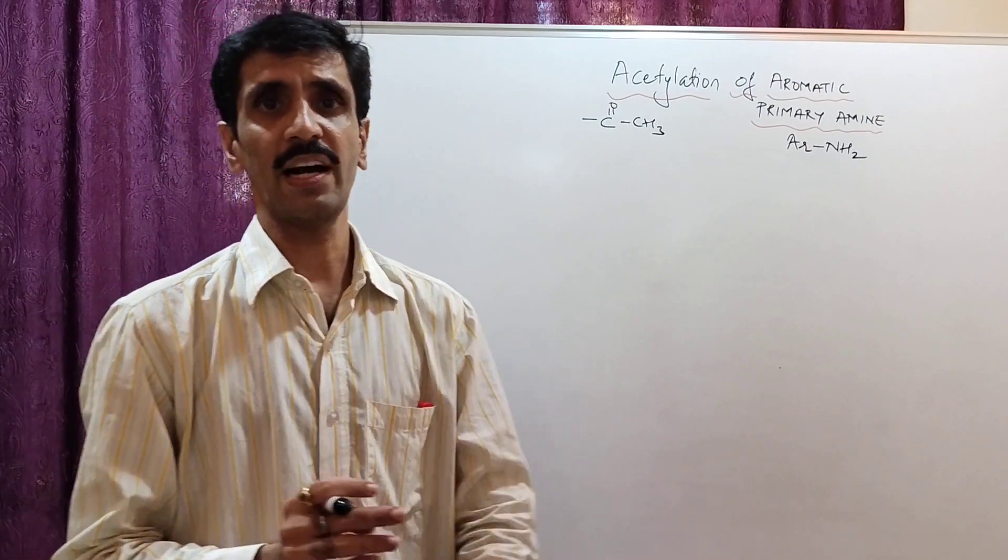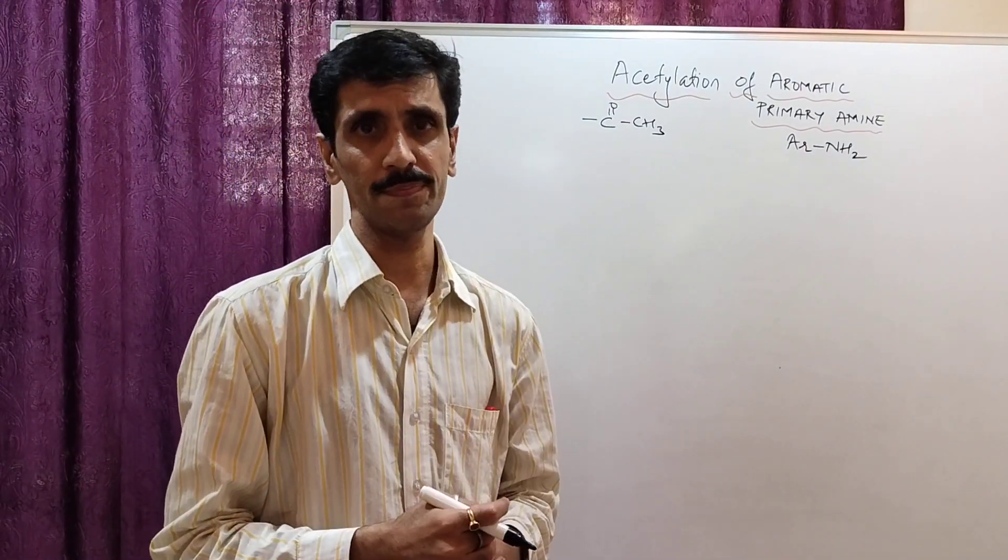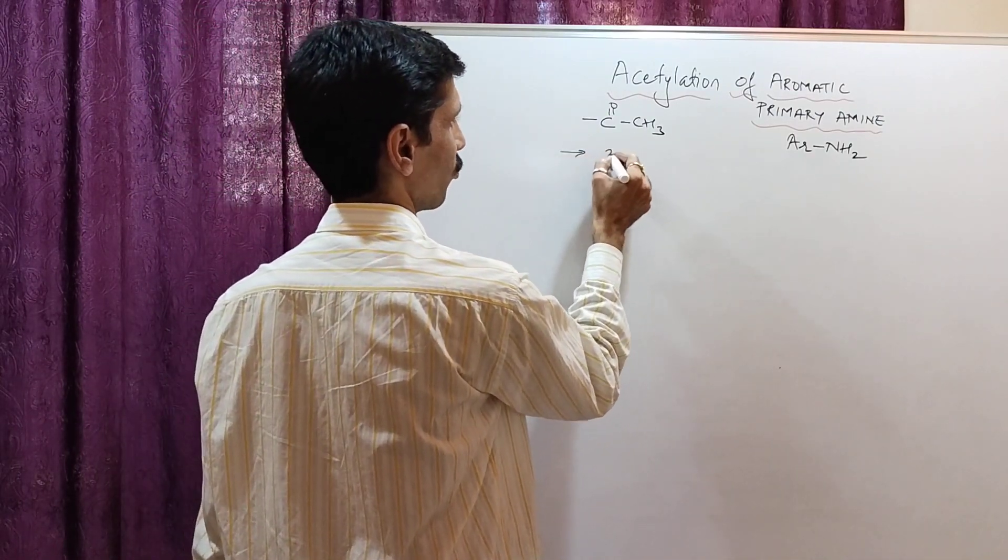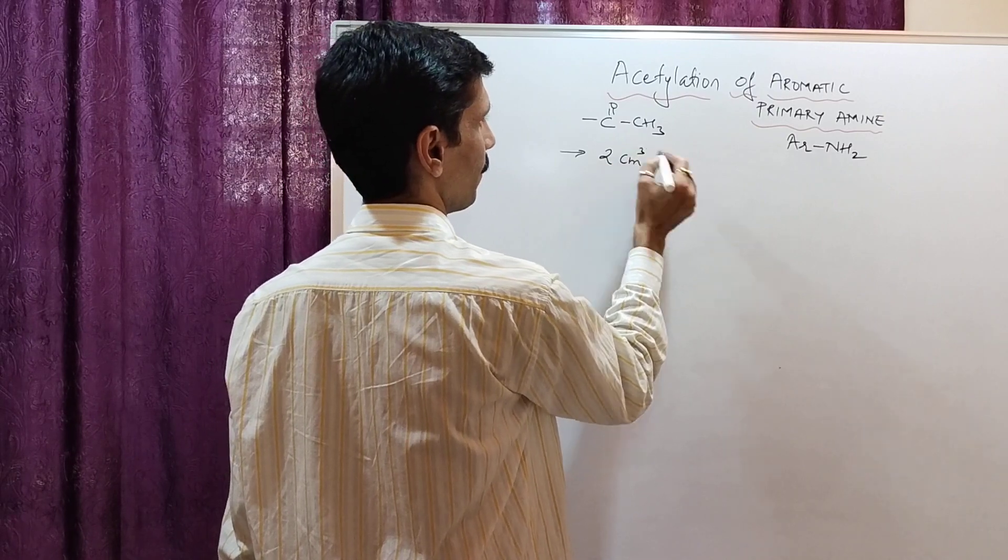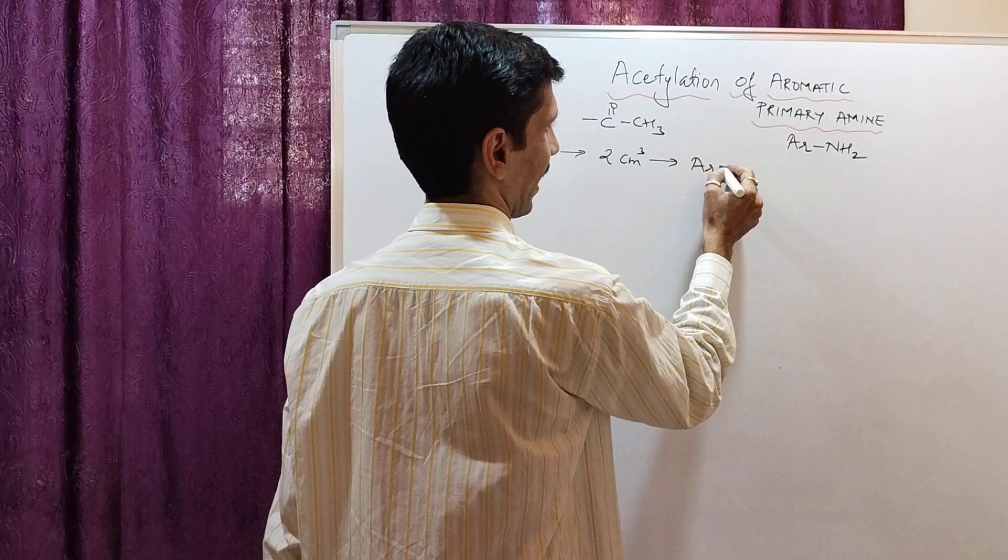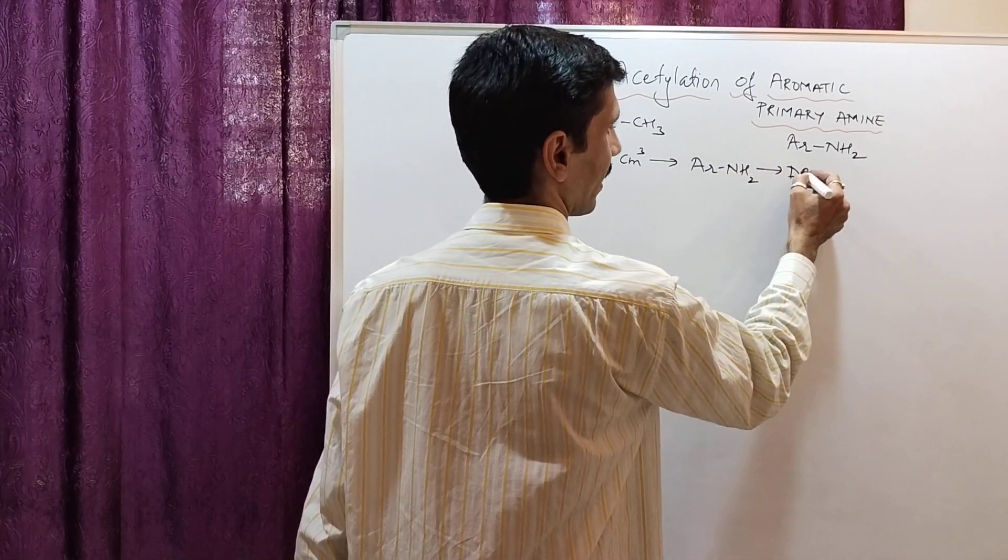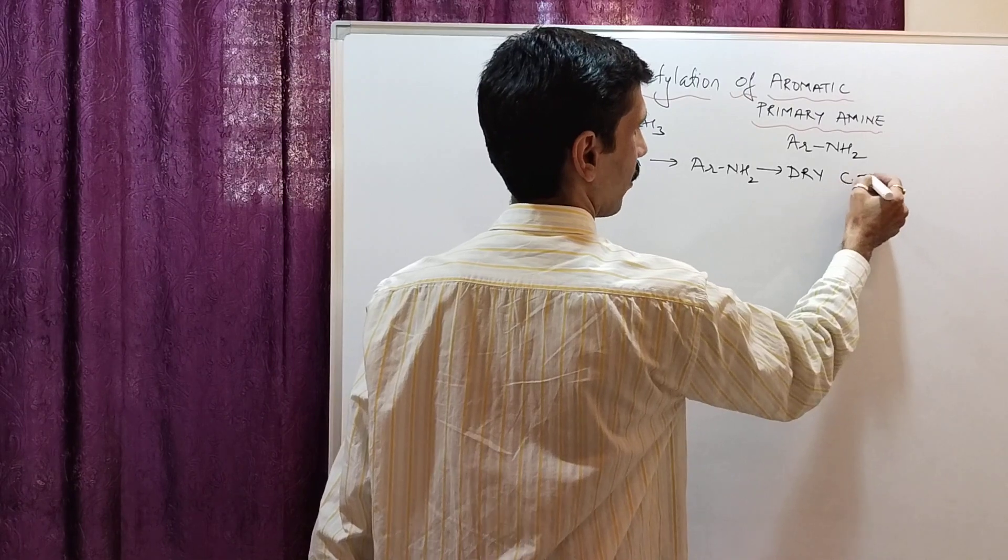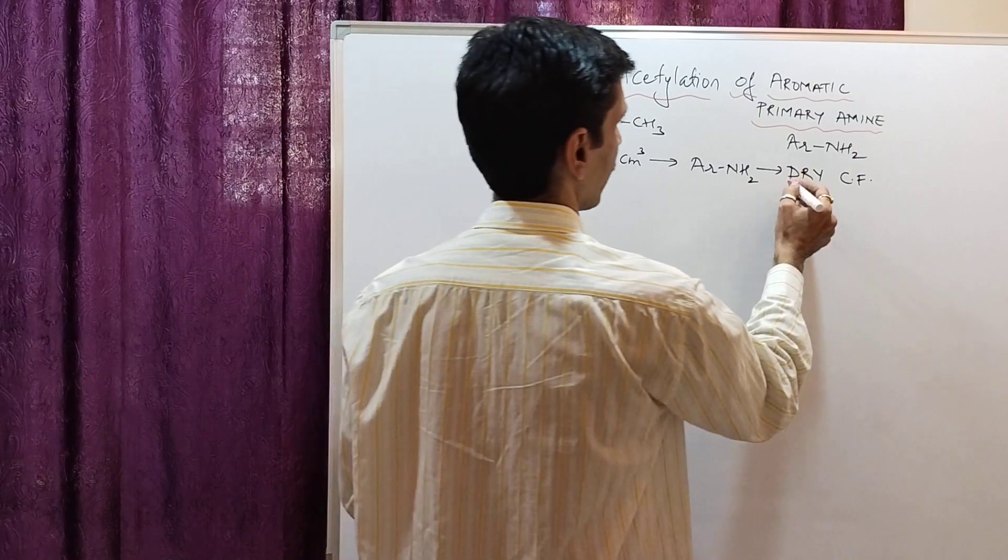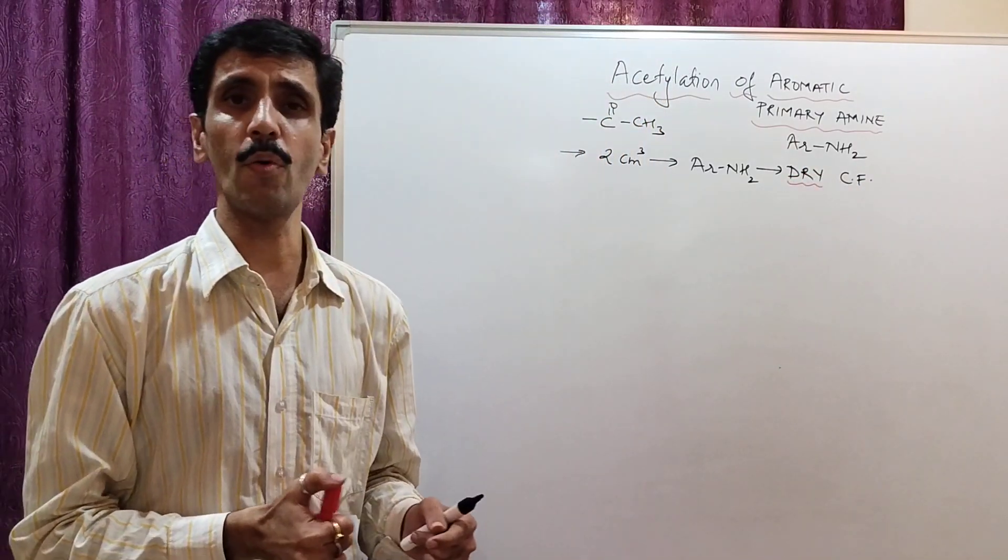So first thing is, I'll explain you the procedure, and then we go into the reactions. So what we do is, in step number one, we are going to take 2 cm³ of the primary amine, that is ArNH2, which has to be taken in a dry conical flask. I stress on this, it has to be a dry conical flask.